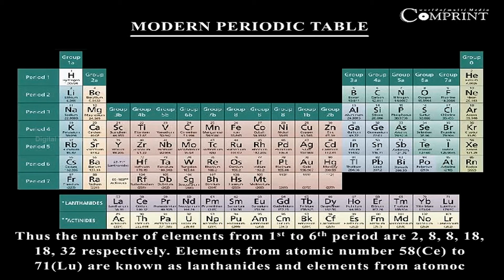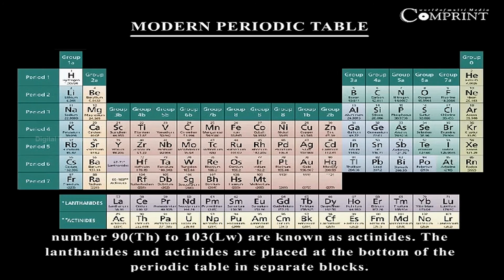Elements from atomic number 58 (Cerium, Ce) to 71 (Lutetium, Lu) are known as lanthanides, and elements from atomic number 90 (Thorium, Th) to 103 (Lawrencium, Lr) are known as actinides. The lanthanides and actinides are placed at the bottom of the periodic table in separate blocks.